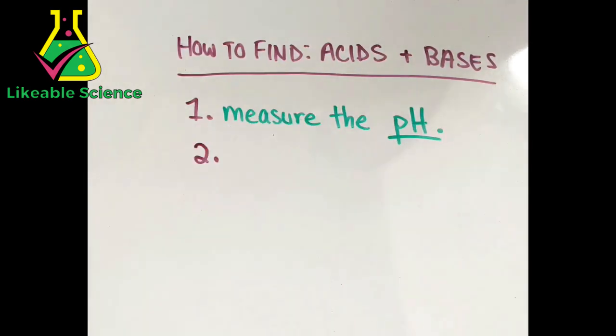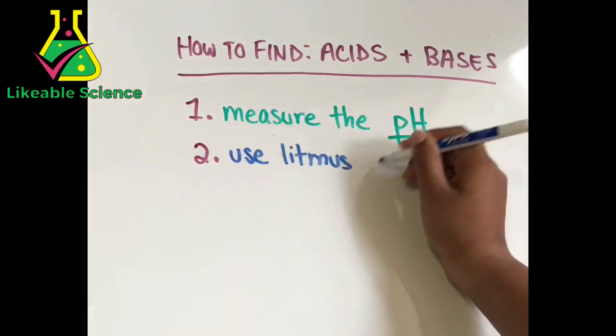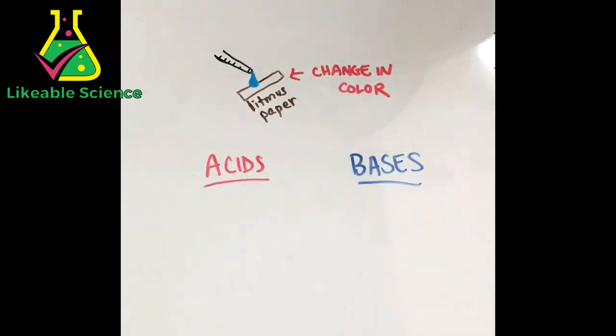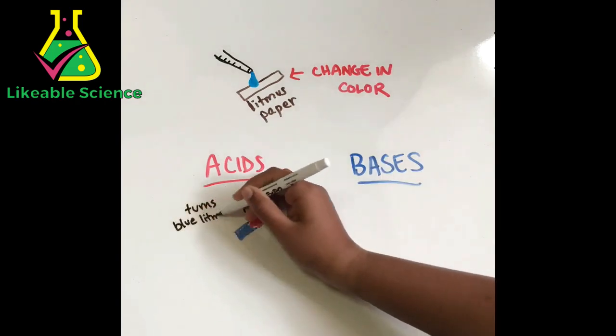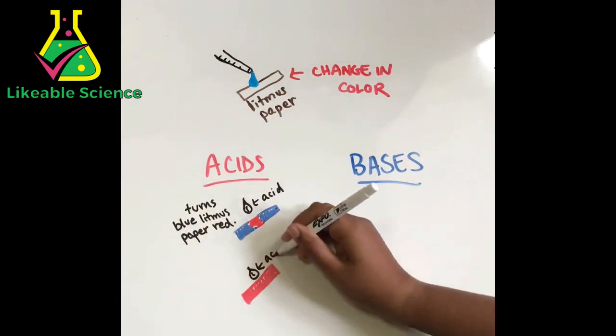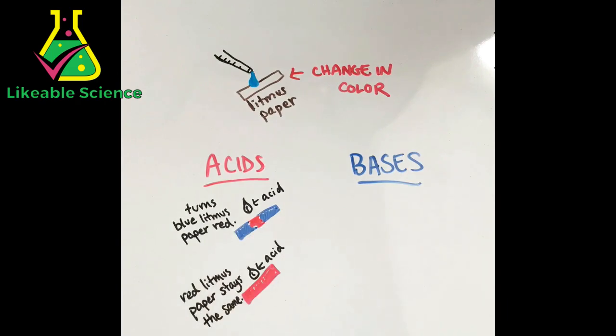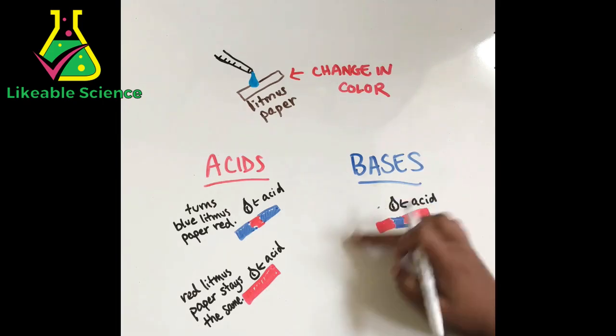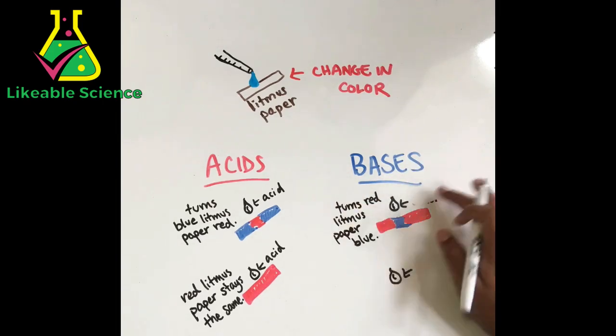Besides measuring the pH of a substance to see if it's an acid or a base, we can actually use something called litmus paper. If you put drops of a liquid onto litmus paper and you observe its color, you can tell whether it's an acid or a base. If you drop an acid on blue litmus paper, it will turn red. If you drop an acid on red litmus paper, it'll stay the same. If you drop a base on red litmus paper, it will turn blue. And if you drop a base on blue litmus paper, it will stay the same.